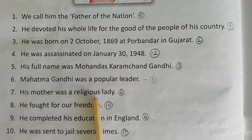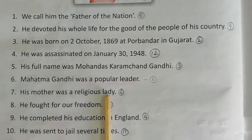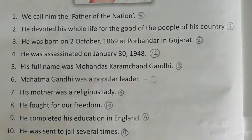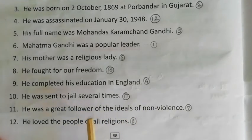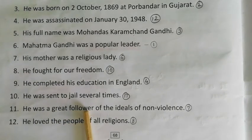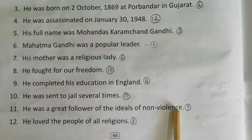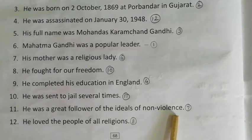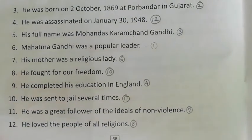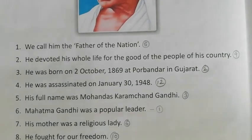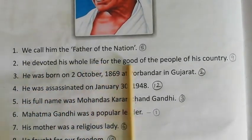The sixth sentence is: 'His mother was a religious lady.' The seventh sentence is: 'He was a great follower of the ideals of non-violence.' The eighth sentence is: 'He loved the people of all religions.' The ninth sentence is: 'He devoted his whole life for the good of the people of his country.'